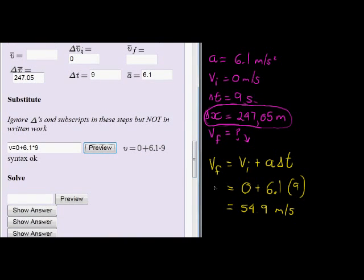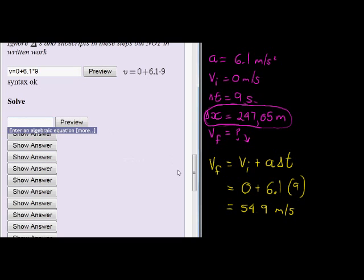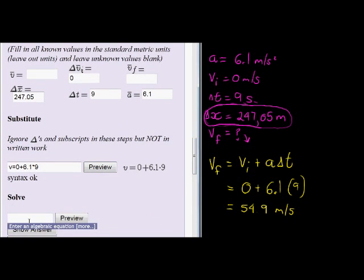There we go. That looks like what I have written there, that velocity is equal to 0 plus 6.1 times 9, and then I write my answer as velocity is equal to, I worked it out, 54.9 meters per second, and I like to write it like that.